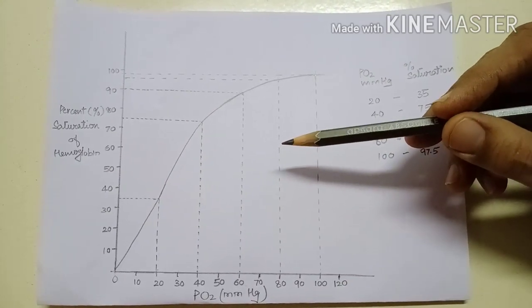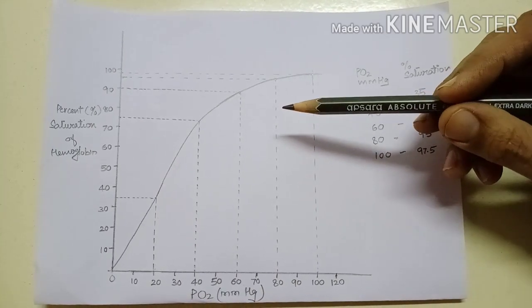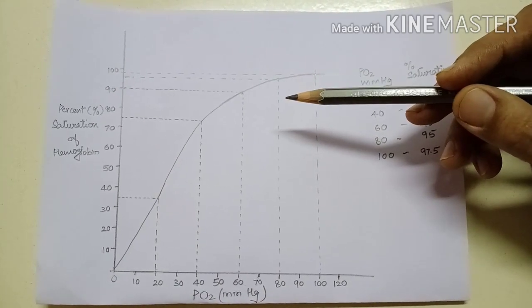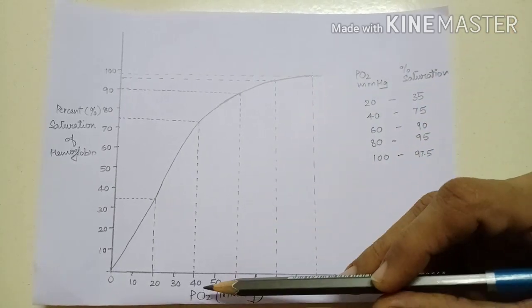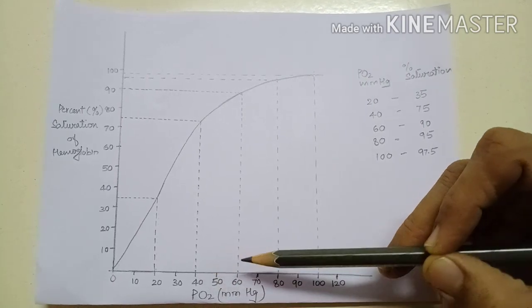Another advantage is tissues are supplied with oxygen according to their need. Hemoglobin acts as a buffer and maintains tissue PO2 at 40 mmHg.